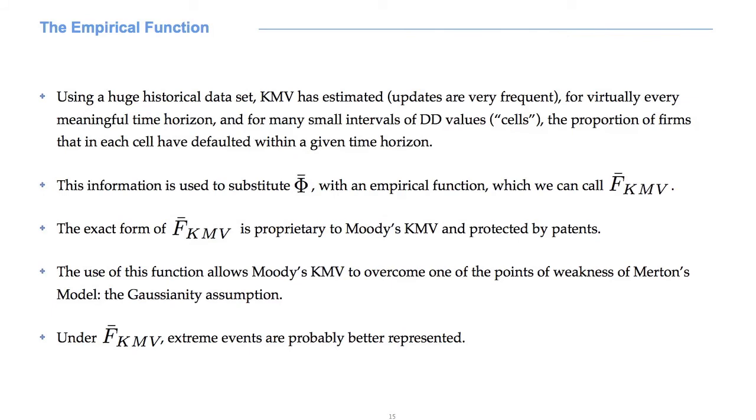The next step in the KMV approach is to substitute, as we have anticipated, phi bar with an empirical function, which we can call F bar KMV. This decreasing function is obtained using historical data. KMV has in fact estimated for virtually every meaningful time horizon and for many small intervals of DD values that we can call cells, the proportion of firms that in each cell have defaulted within a given time horizon.